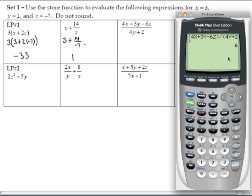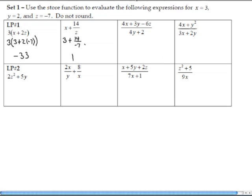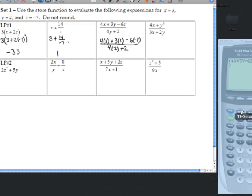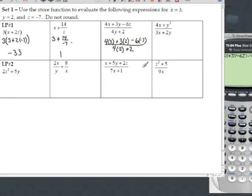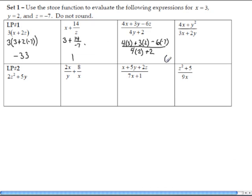It comes out to 6. Let's show our work and write the answer. We have (4 × 3 + 3 × 2 - 6 × (-7)) / (4 × 2 + 2) = 6. Now go ahead and finish lesson practice number 1, and complete lesson practice 2.